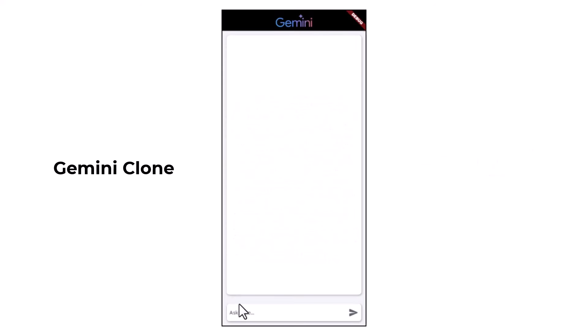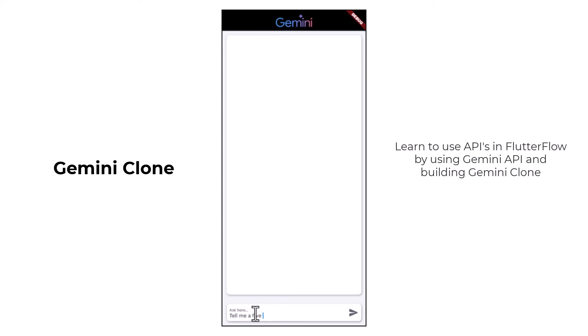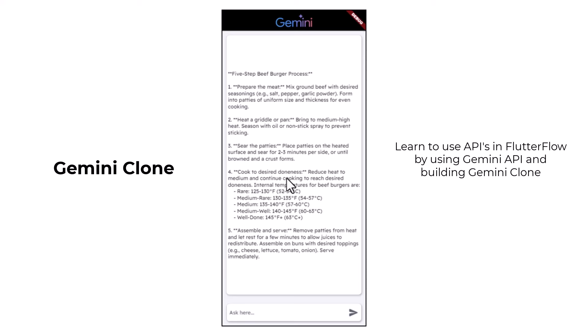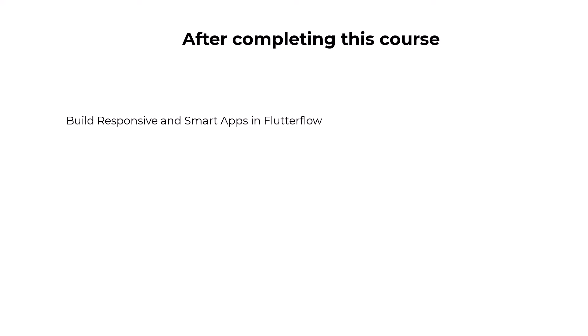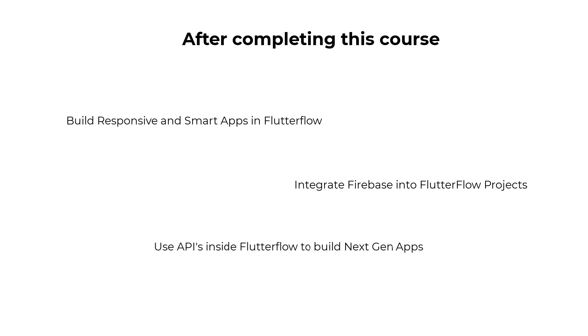After that we are going to build our fourth application — a Gemini clone. The user will type his question and send it to Gemini, and then Gemini will generate a response which we are going to show on screen. For building this application, we will integrate the API of Google Gemini inside FlutterFlow. So after completing this course, you will be able to build responsive and smart applications in FlutterFlow, integrate Firebase, and also integrate APIs to build smart next generation applications.